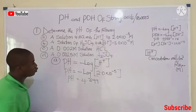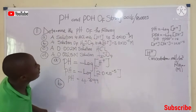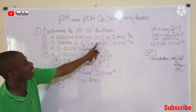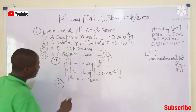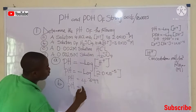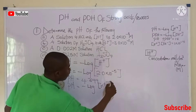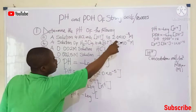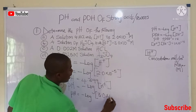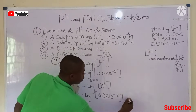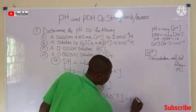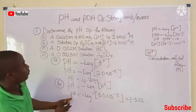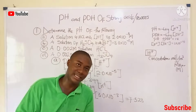Question B says: determine the pH of a solution of H₂SO₄ with H⁺ concentration in the bracket. pH equals negative logarithm to the base 10 of hydrogen ion concentration. So pH equals negative log of 3.0 times 10 raised to the power of negative 8 molar. When we press our calculator for this, we get a pH value of 7.523.